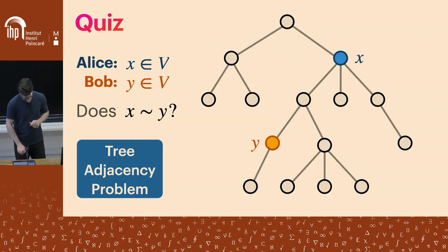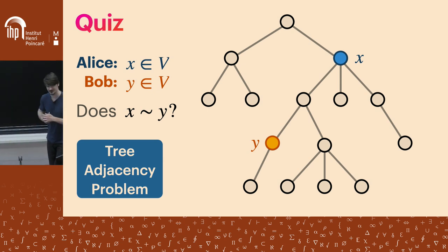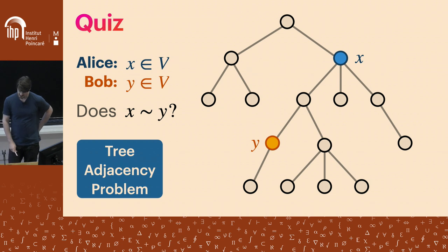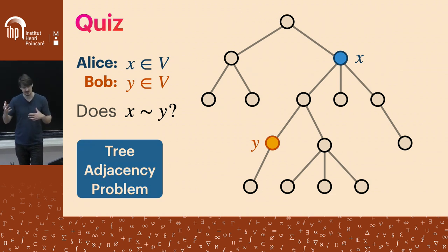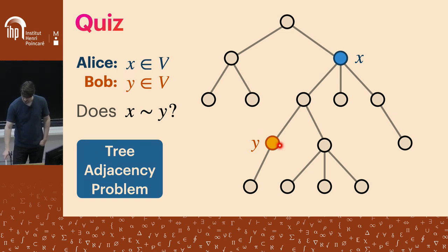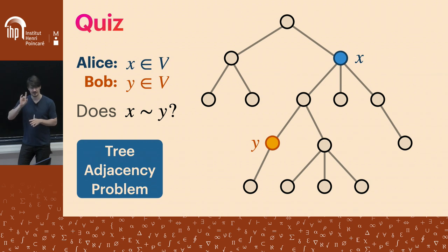Let me give you more examples of problems with hyper-efficient protocols. Consider the tree adjacency problem: Alice and Bob both play this game on a fixed large tree with n nodes. Both players know the tree, and each is given a node. Bob holds some node, Alice knows some other node, and they just want to decide if the two nodes are adjacent in the tree. I claim this admits a very fast randomized communication protocol — can you figure out what it is?